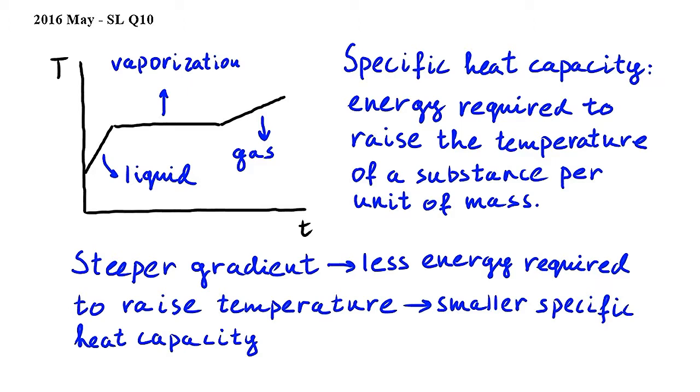Since in our graph the liquid stage has a steeper gradient than the gas stage, we can deduce that Cg, the specific heat capacity of gas, is larger than Cl, the specific heat capacity of the liquid. This means that the answer to this question is B.